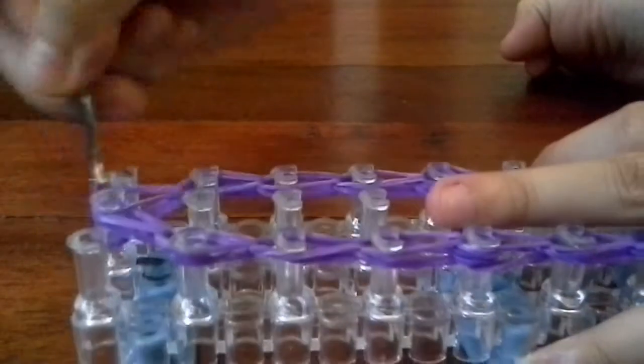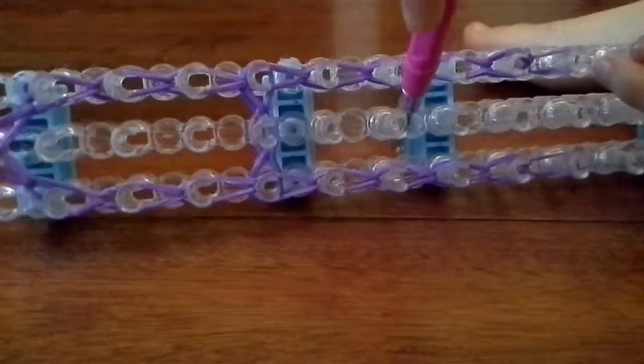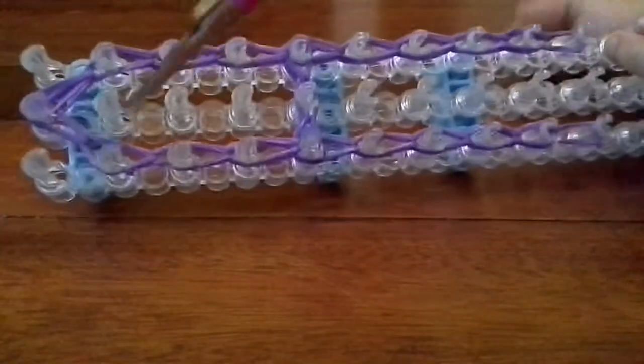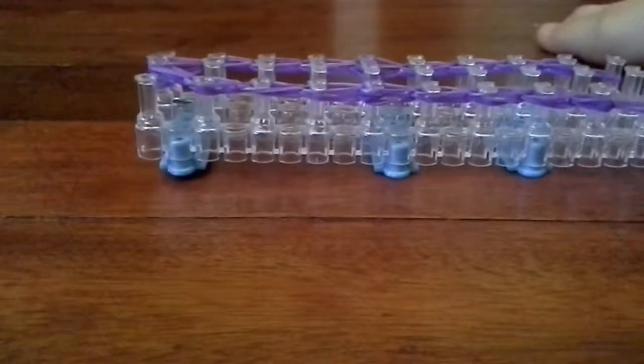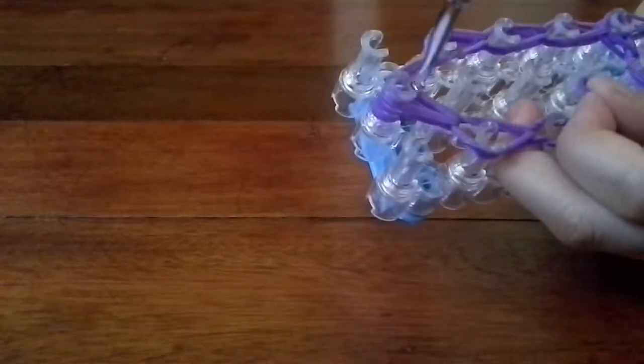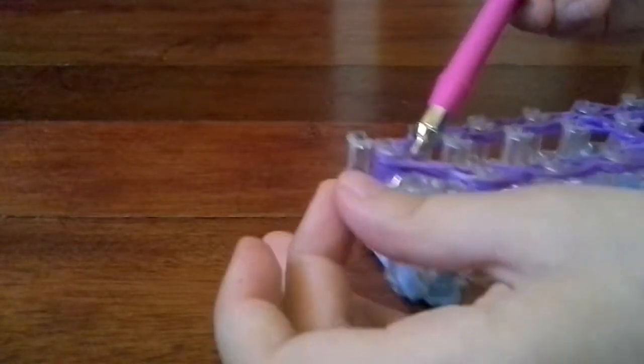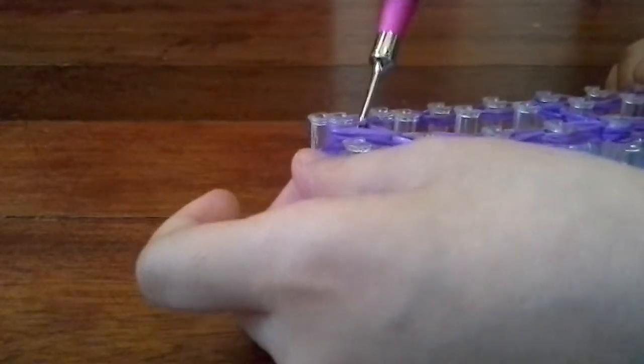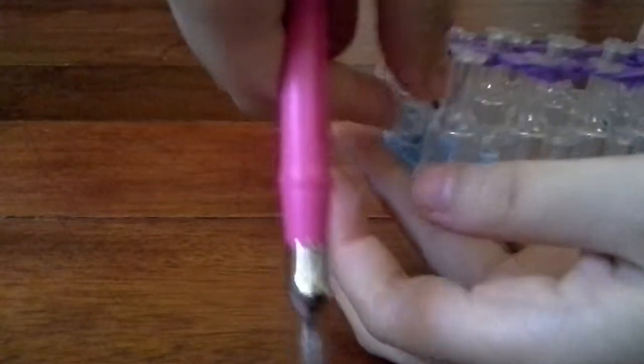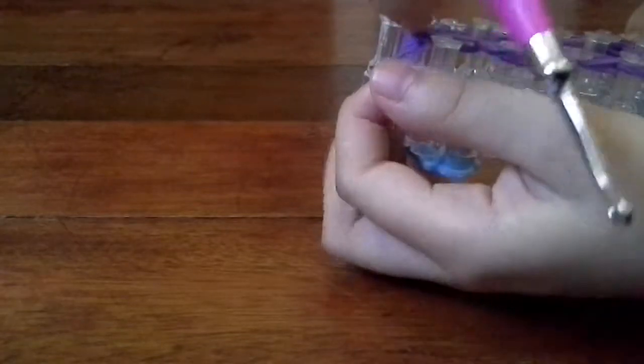Your loom should look like this. Everything forms into a drop shape. Now get another band, put your hook in that, and pull it there. Then put the band on the hook and pull.